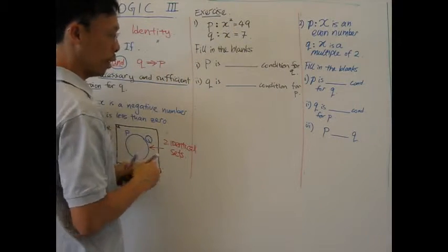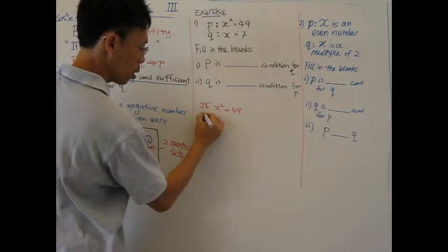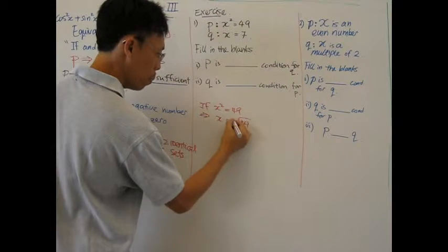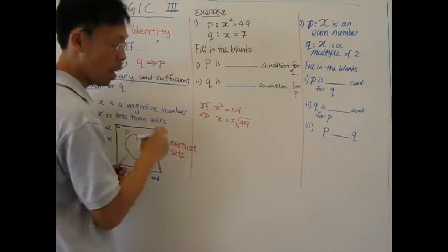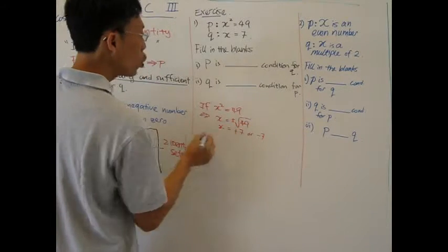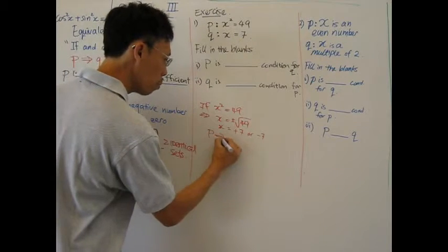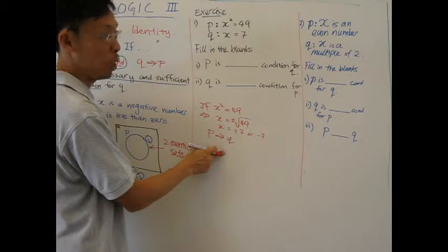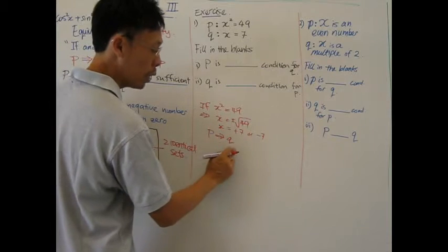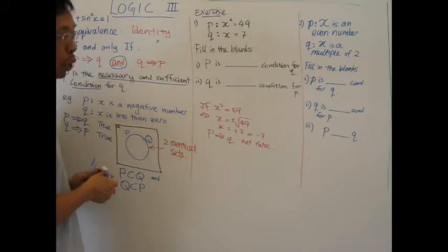Let's look at it. X squared equals 49. If I have x squared equals 49, then x is plus or minus 7. So we now know P implies Q. Is this true? No, it's not true, because x has to be plus 7 or negative 7. Therefore, this statement is not true. It's false.